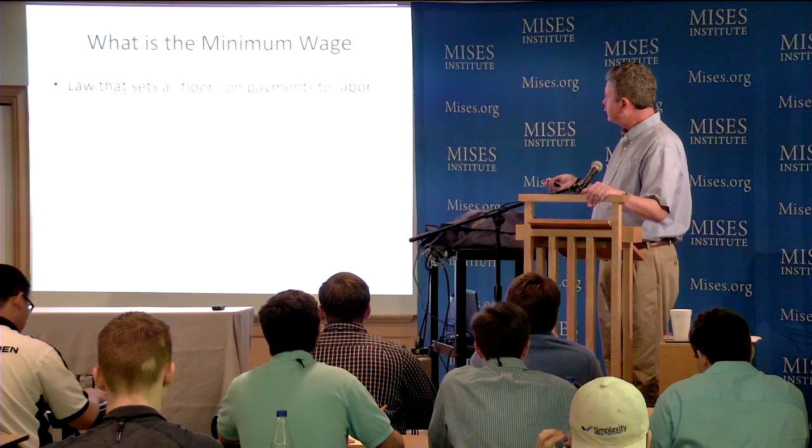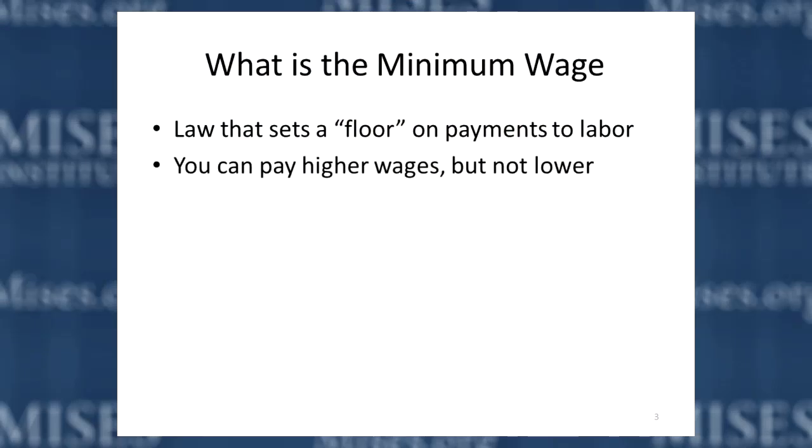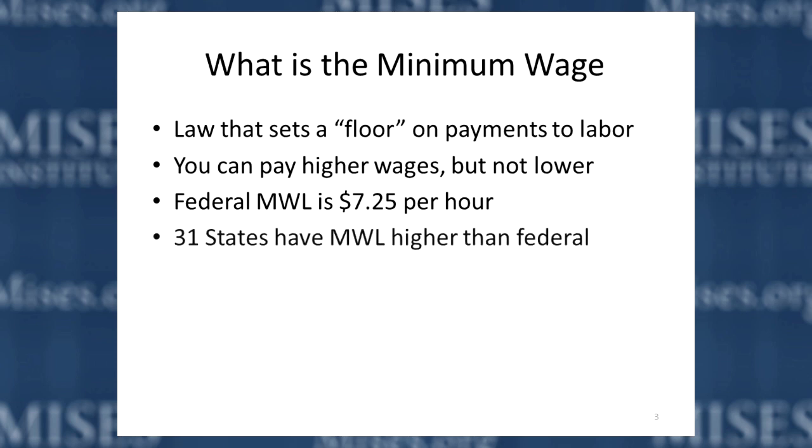We can't make any perfect predictions because of other factors. Austrians take a very holistic examination of labor markets and all the factors that might impact employment and the well-being of employees. Minimum wage law is a floor on payments to labor — people are not allowed to contract between employee and employer below a certain level. You can pay higher than the minimum, but not lower. Currently, the federal minimum wage in the United States is $7.25 an hour.